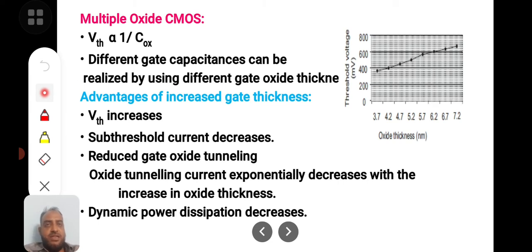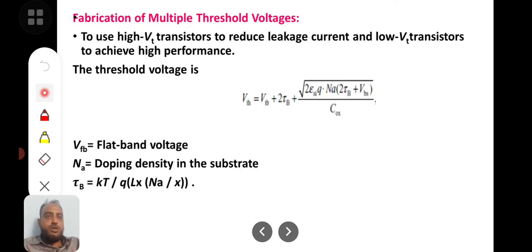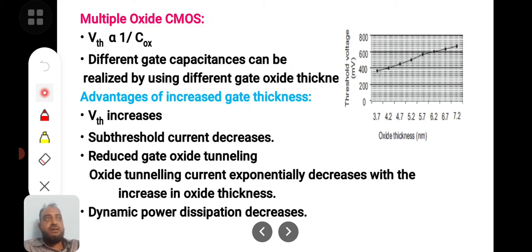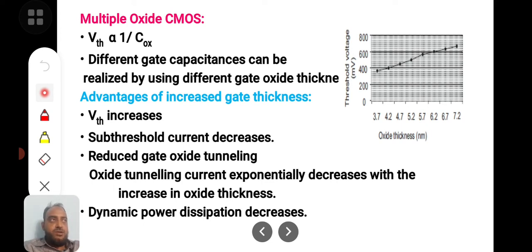The other technique is multiple oxide gate capacitors. As seen previously, threshold voltage is inversely proportional to oxide thickness, where capacitance C equals epsilon times A divided by D, where A is the area of the gate structure and D is the thickness of the oxide layer. Different gate capacitors can be realized using different oxide thicknesses. Using thick oxide layers results in less sub-threshold leakage.